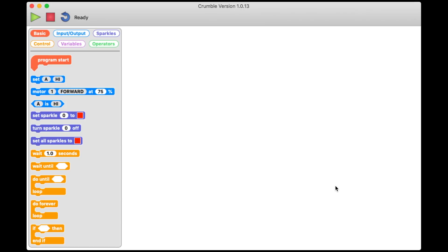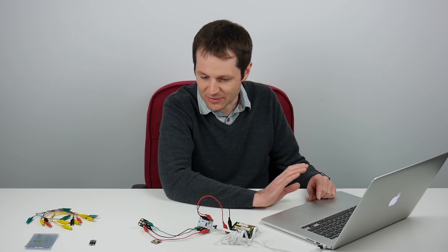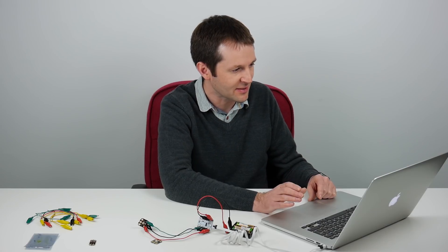I've launched the Crumble software on my computer and you can see on the left here I've got loads of blocks which are my commands and I've got a few buttons on the top. This green one sends the program to the Crumble and this red one stops it. This one here is an undelete so if you accidentally delete some blocks you can rescue them. My very first program I'm going to do the simplest thing I can possibly do.